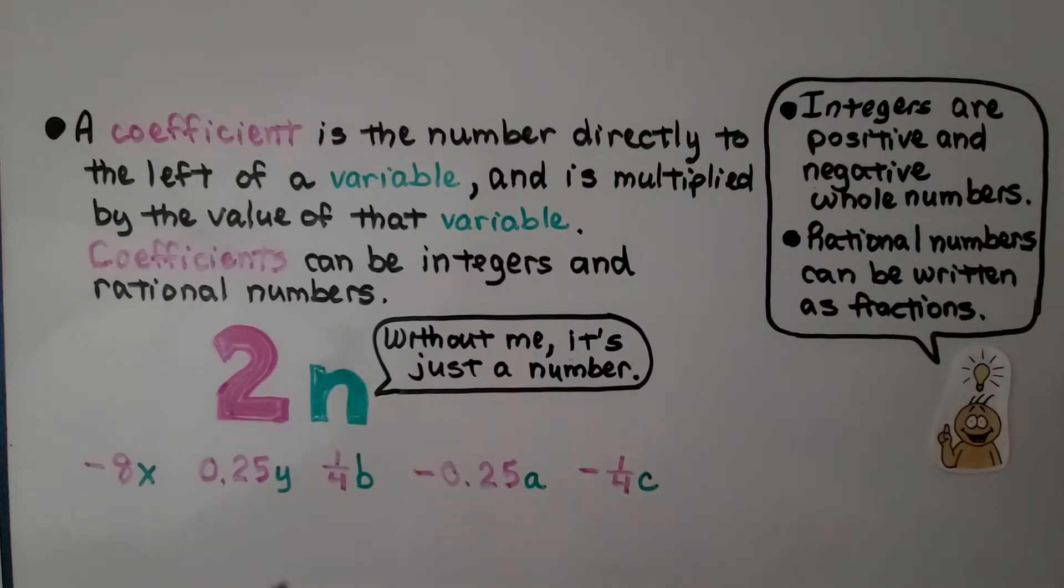A coefficient is the number directly to the left of the variable, and it's multiplied by the value of that variable. And coefficients can be integers and rational numbers. So this, too, is just a number without this variable next to it.